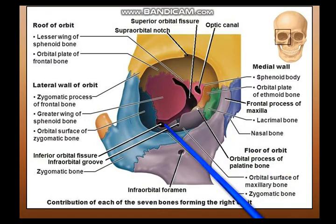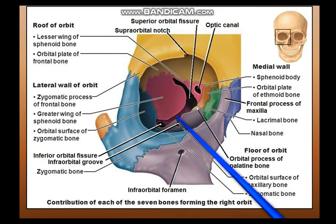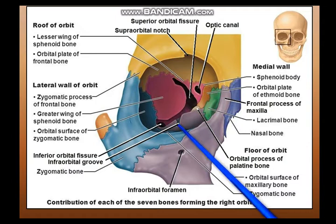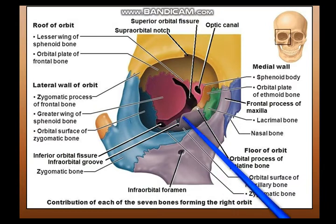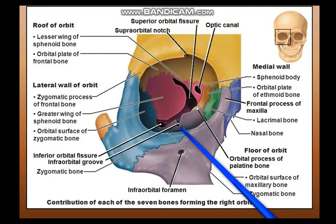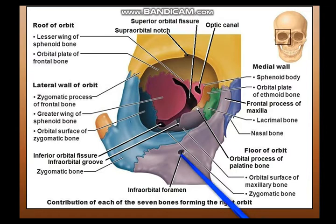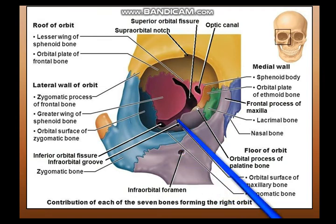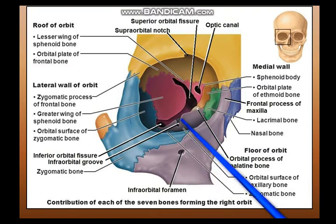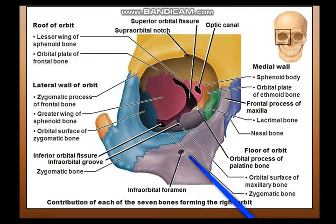Extending from the inferior orbital fissure is the infraorbital groove, and also the emergence of the zygomatic nerve. This infraorbital groove goes into the infraorbital canal and comes out on the anterior surface of the skull as the infraorbital foramen. So: infraorbital groove, infraorbital canal, infraorbital foramen — this gives passage to the infraorbital vessels and nerves. The infraorbital nerve is actually a continuation of the maxillary nerve, and the infraorbital vessels are branches of the third part of the maxillary artery.